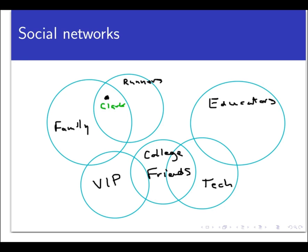So for example, in one of my social networks I have a group for education people, a group for technology people, one for family members, one for college friends, one for high school friends, one for co-workers, one for runners, and one that I call VIPs, who are my closest confidants in the network. And sometimes there are people who are in multiple groups at the same time.